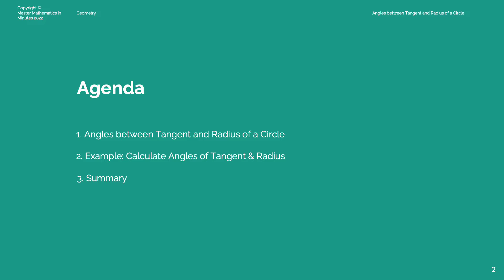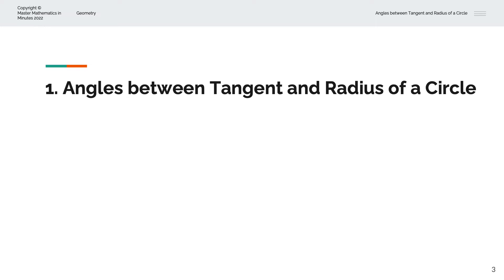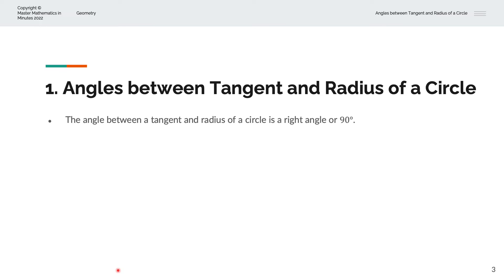Be kind and subscribe for more videos. The angle between the tangent and radius of a circle is a right angle, or 90 degrees.